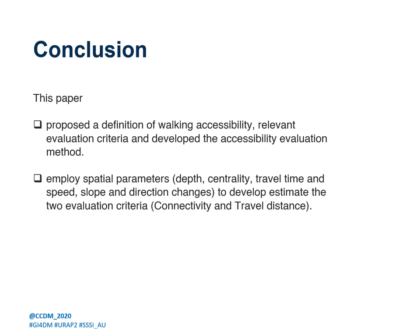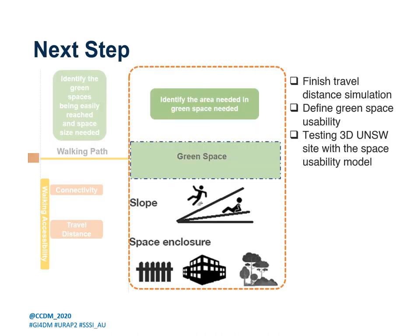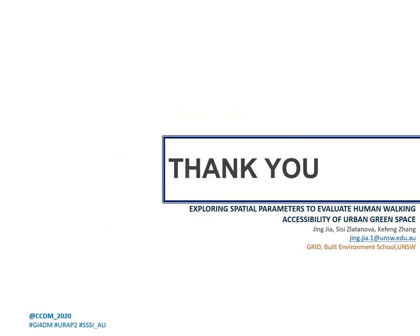In conclusion, this paper proposed a definition of walking accessibility, relevant evaluation criteria, and developed the accessibility evaluation methods. It employs spatial parameters such as depth, centrality, travel time, and speed to evaluate the two criteria: connectivity and travel distance. As a next step, we will finish the travel distance simulation within the 3D model, and then define green space usability and test it within the 3D UNSW site. Thank you.